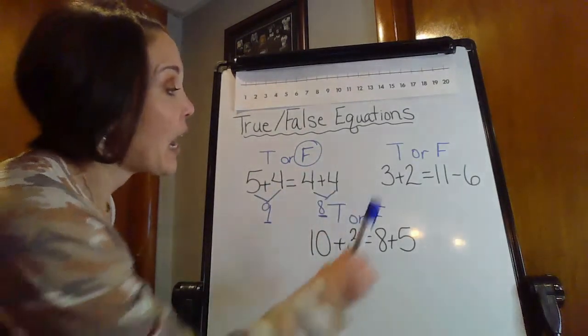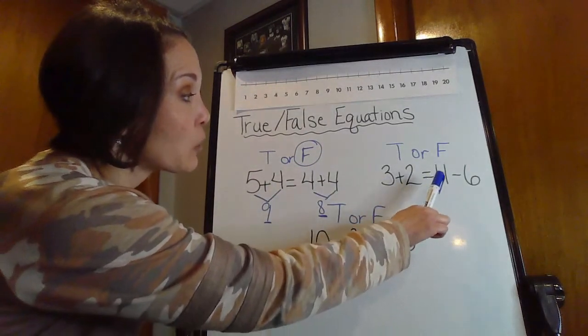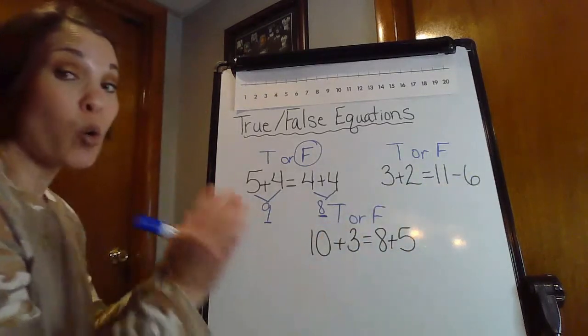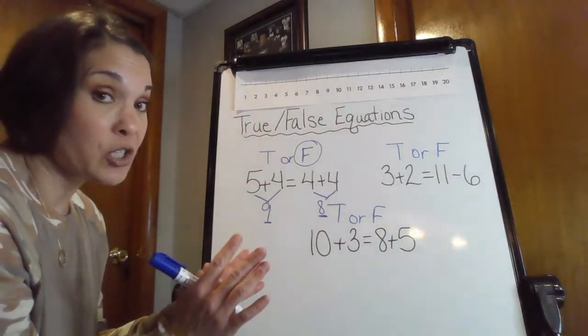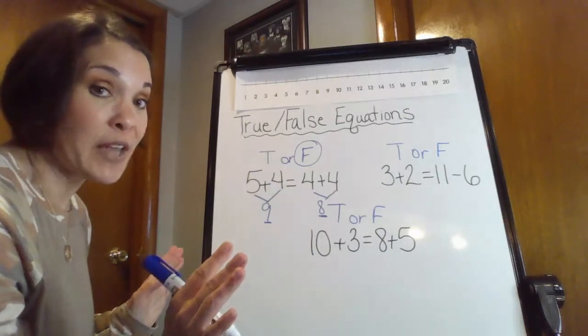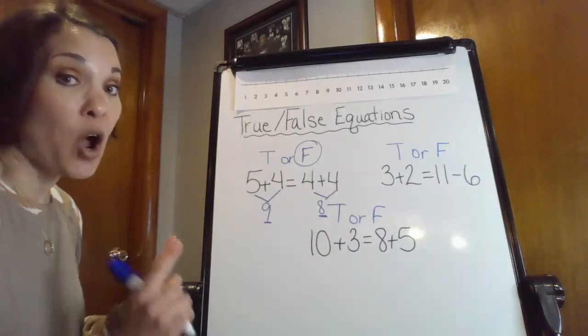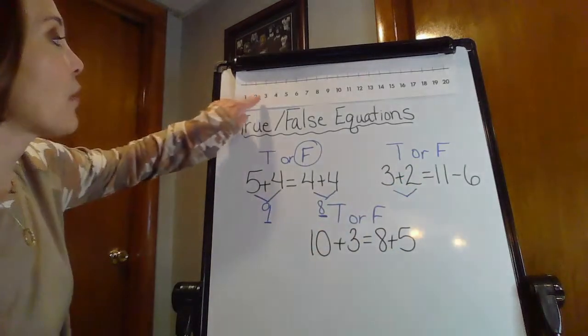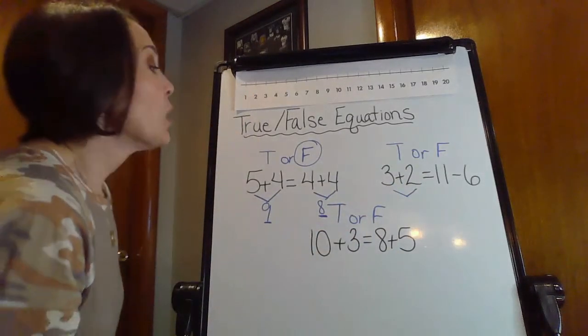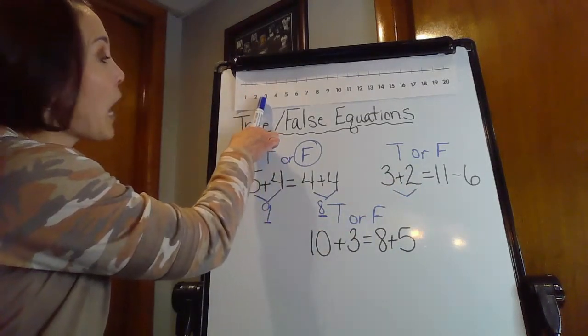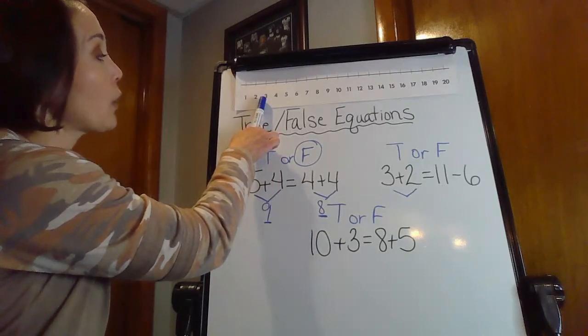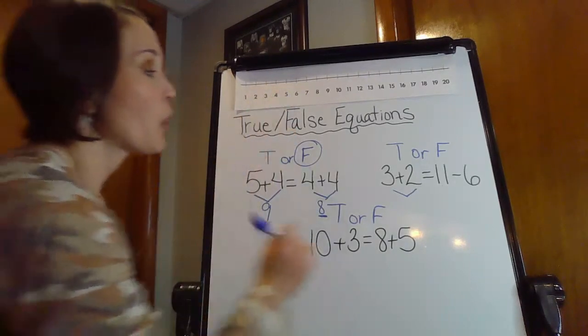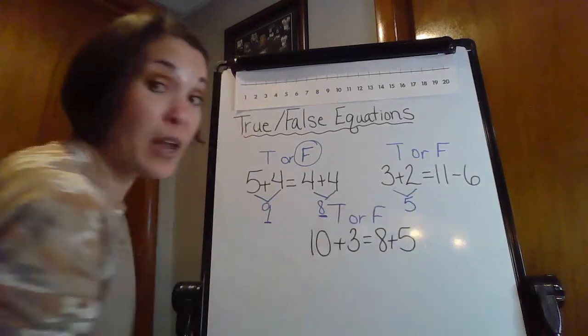So now let's go to our next one. I have three plus two is equal to 11 minus six. So we can have two different operations. Remember, they don't always have to be the same, but I still need to solve for both. So here I have three plus two. Oh, it looks like I have another near double again. So I'm going to start at my three. I'm going to hop up two more. One, two. So three plus two is going to give me five.